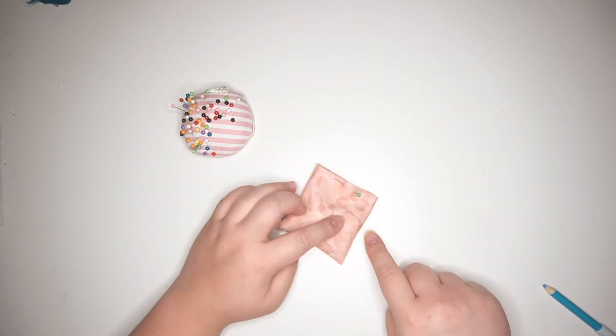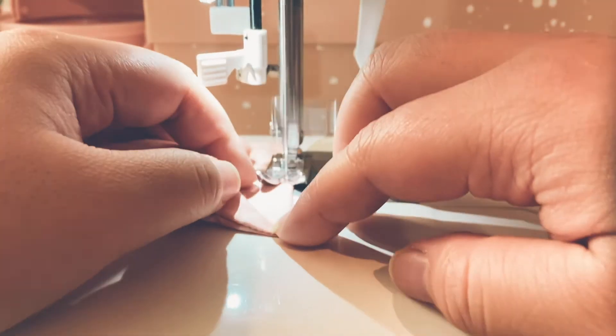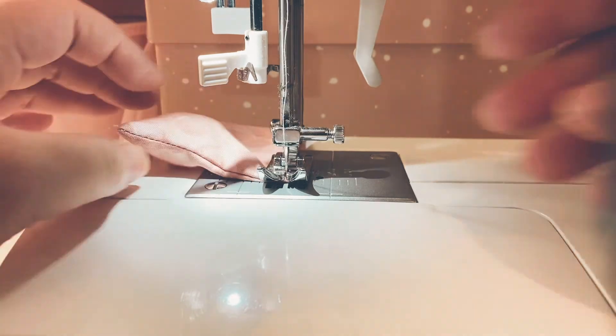To finish this off, I'm going to top stitch around the toy. You can also stuff some cotton in there, but I know that my dogs like to tear apart toys and often leave the cotton everywhere, so I decided not to.